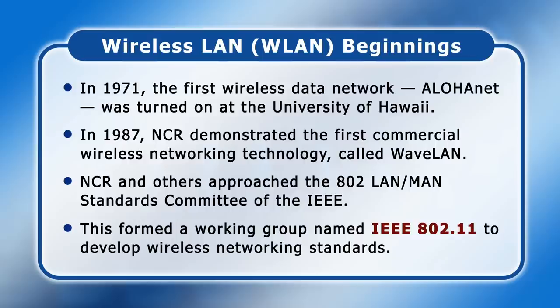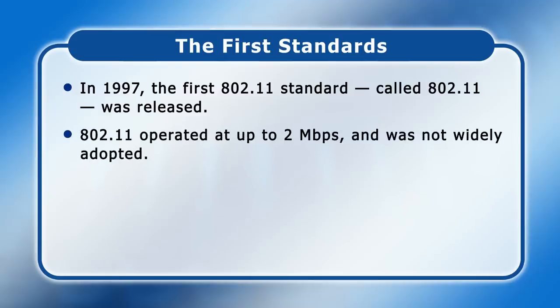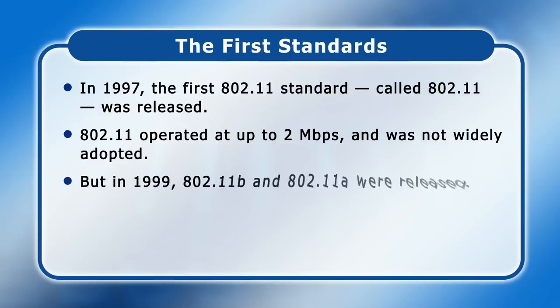This is where the 802.11 we see in Wi-Fi specifications comes from. In 1997, the first 802.11 standard — simply called 802.11 — was released. This allowed wireless data transfers at up to 2 megabits per second and was not widely adopted. However, in 1999, two updates known as 802.11b and 802.11a were released.